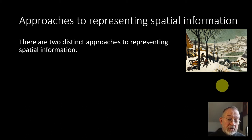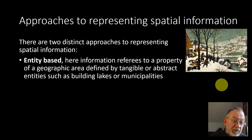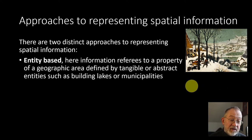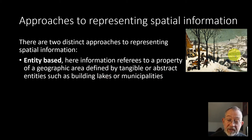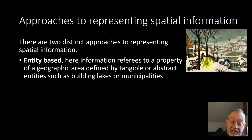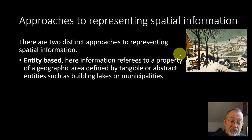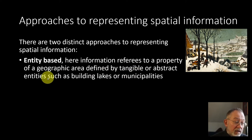There are two approaches to specifying what spatial information we can use. The first is entity-based, where the information references a property of a geographic area defined by a tangible or abstract entity, such as buildings. So a tangible entity could be this lake here, or a building, or a tree, or a person. The spatial information is then some property of that entity — the species and height of the tree, or the number of people skating on the ice, or the use of the building. We are representing our spatial information as properties of our entities.